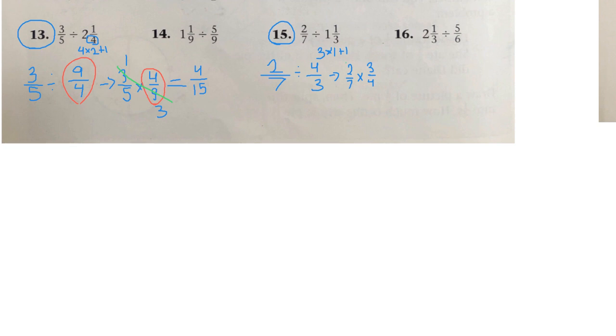Cancel if you can. 2 and 4 have a common factor of 2. 2 divided by 2 is 1, 4 divided by 2 is 2. 7 and 3 don't have a common factor. So then multiply. 1 times 3 is 3, 7 times 2 is 14. There's your answer.